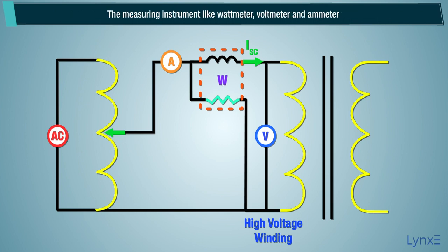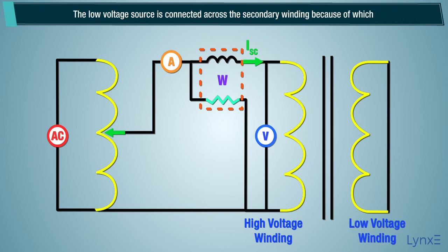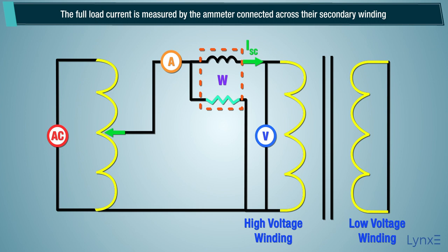The measuring instruments — wattmeter, voltmeter, and ammeter — are connected to the high voltage winding of the transformer. The primary winding is short-circuited with the help of a thick strip or ammeter connected to its terminal. A low voltage source is connected across the secondary winding, because of which the full load current flows from both the secondary and the primary winding of the transformer. The full load current is measured by the ammeter connected across the secondary winding. The circuit diagram of the short circuit test is shown below.